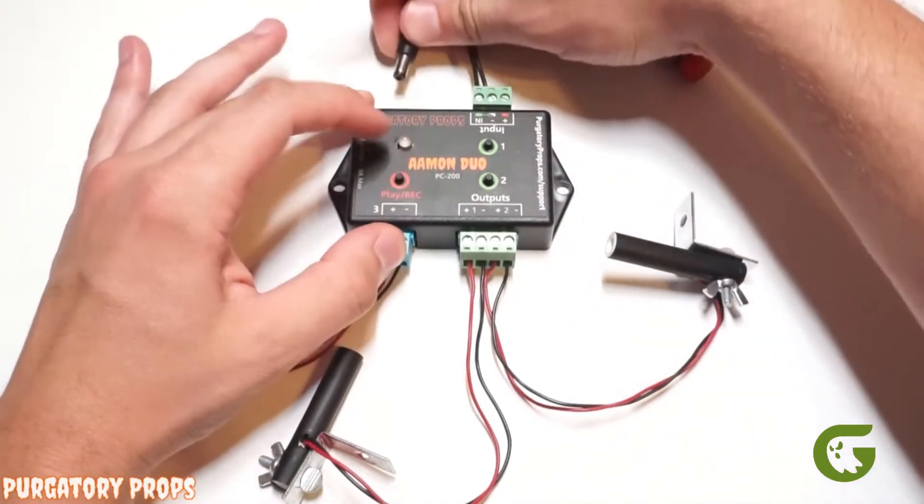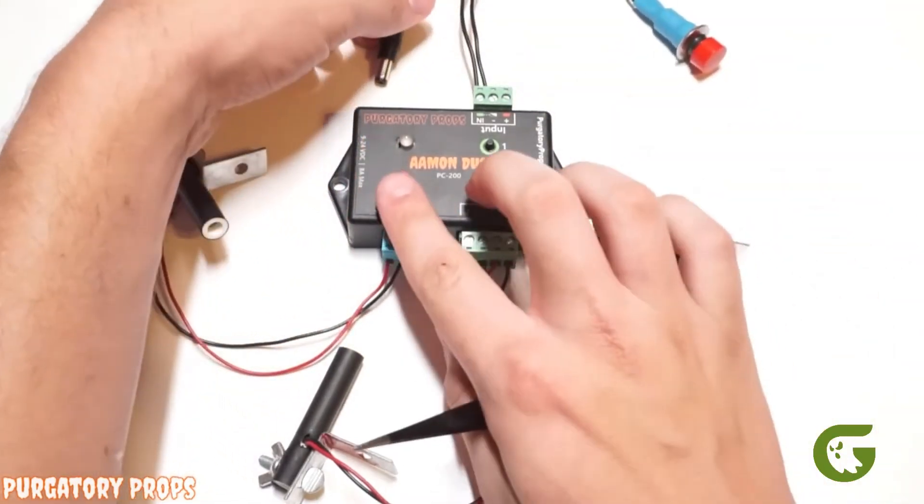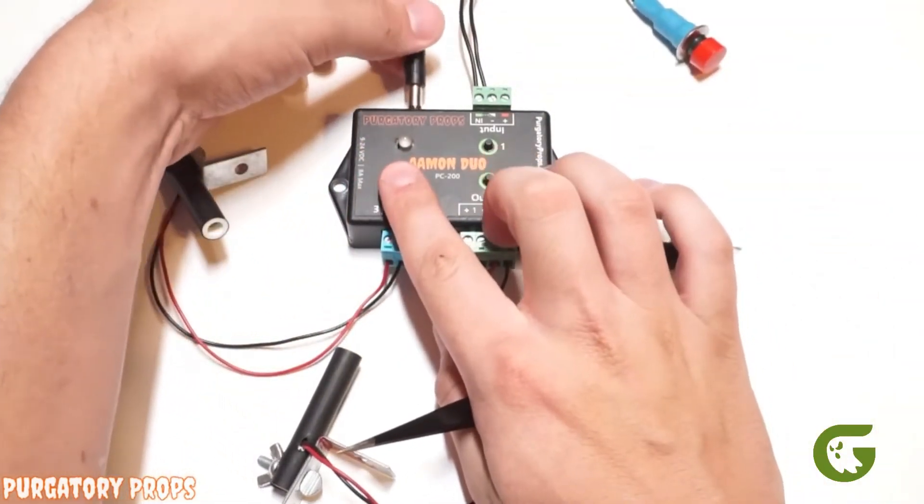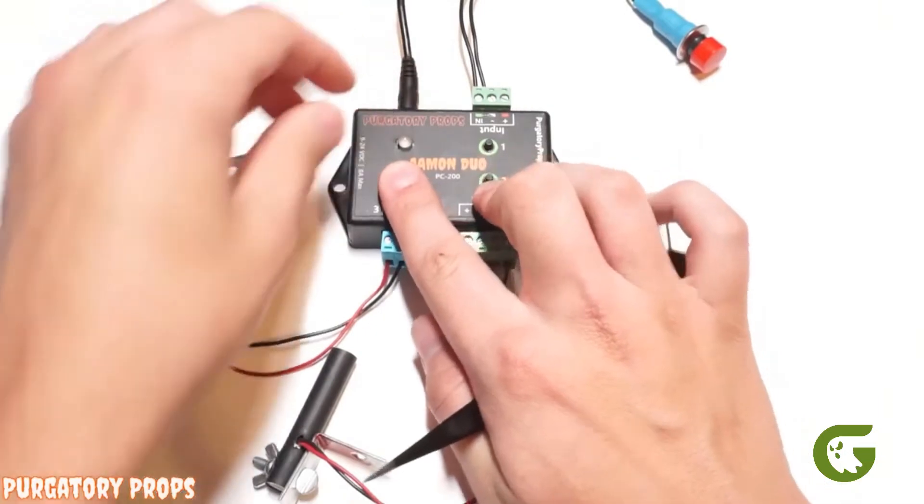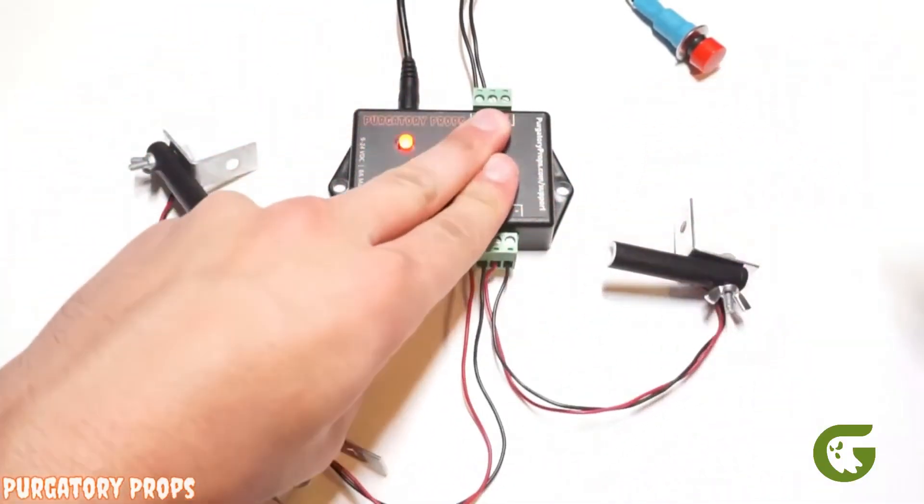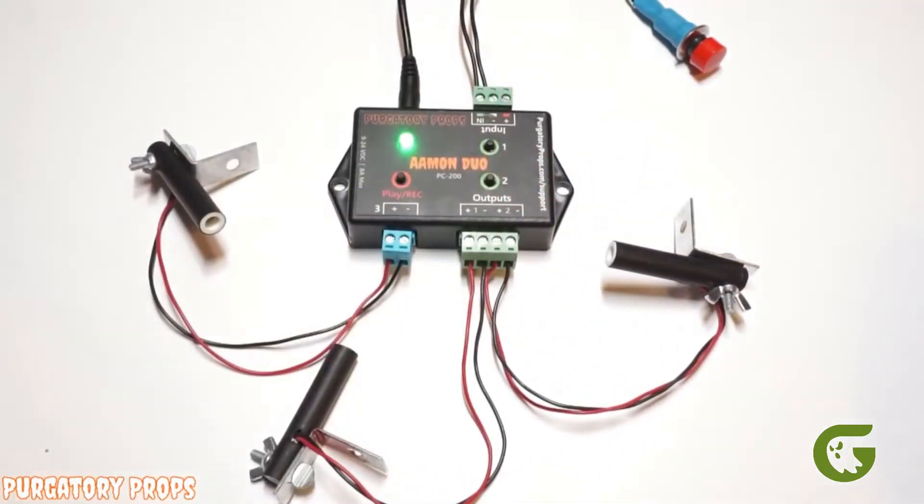If we turn off again, hold play record, plug back in. When it turns blue, we let go and hold the other two. Then when it turns red, we release. Now this is in start and end mode.